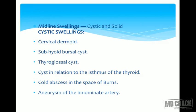The suprasternal space of Burns contains lymph nodes, which can give rise to a suprasternal cold abscess. Then we have an aneurysm of the innominate artery. These are all the cystic swellings in the midline.